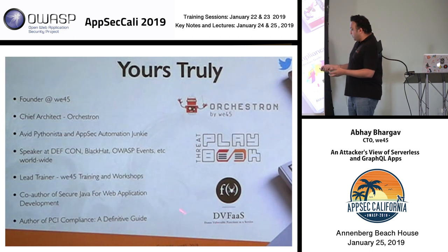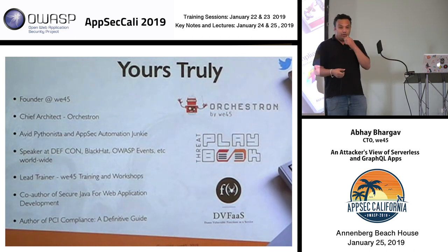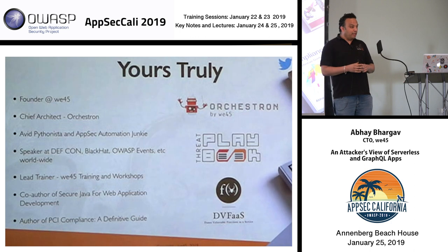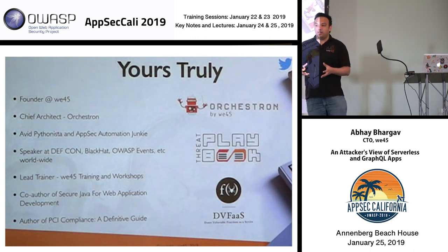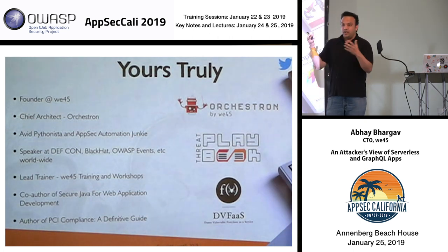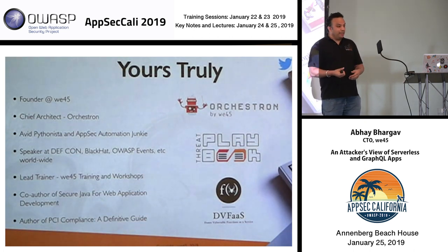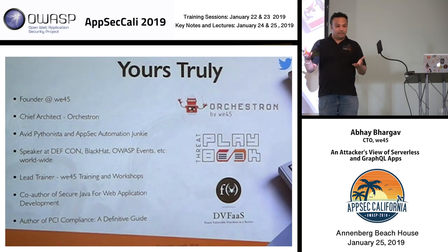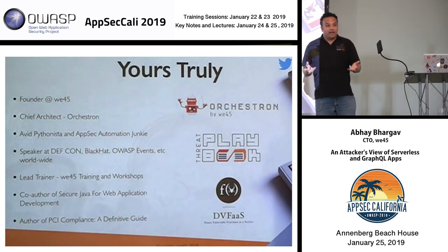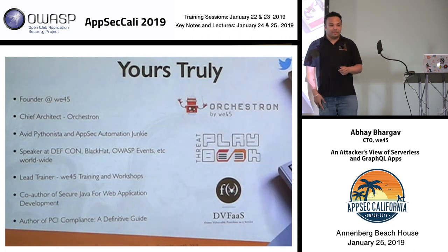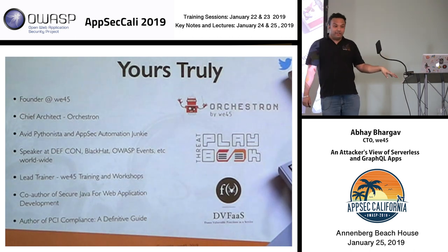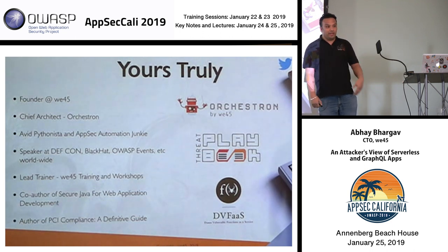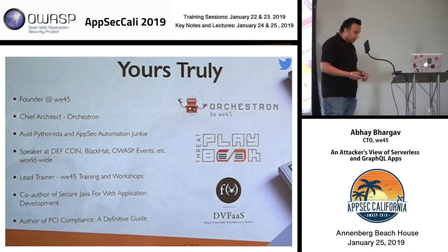Two weeks before coming into this conference, we released a new open source tool called DVFAS — Damn Vulnerable Functions as a Service. These are intentionally vulnerable serverless functions that you can deploy on your own Amazon Lambda stack and test out how attacks on serverless functions work. Don't run this on production or your workplace AWS account. But to learn how things work, you can try out DVFAS. We have DVFAS stickers — come see me after the talk.